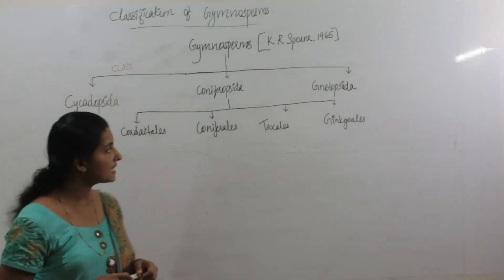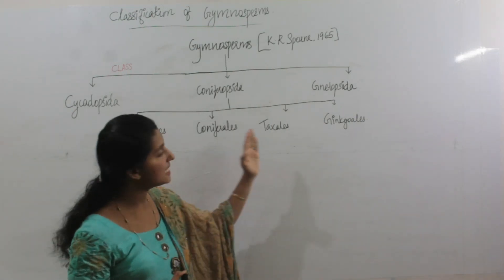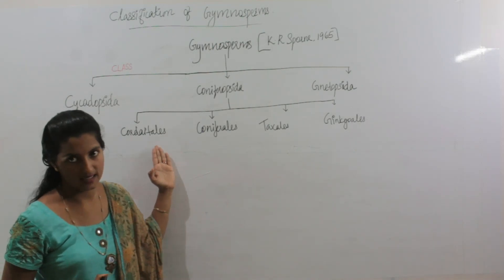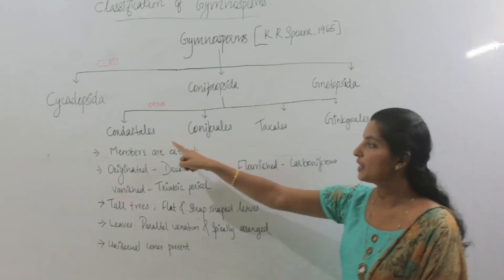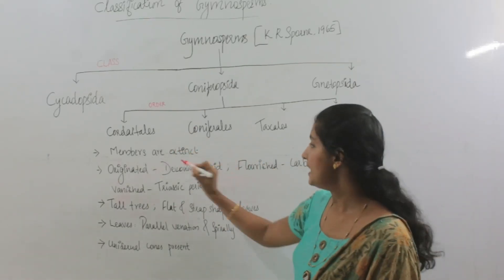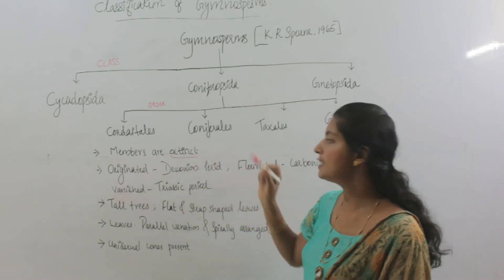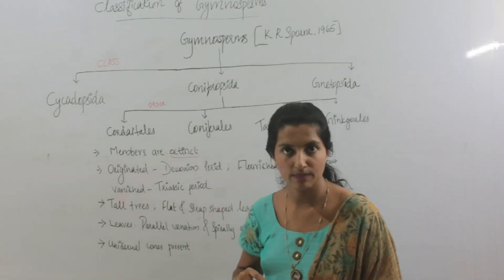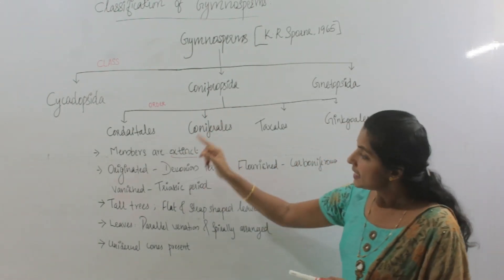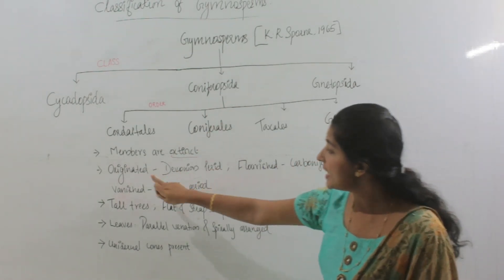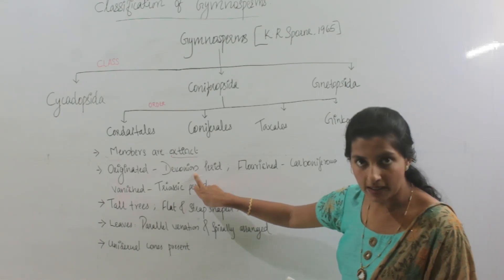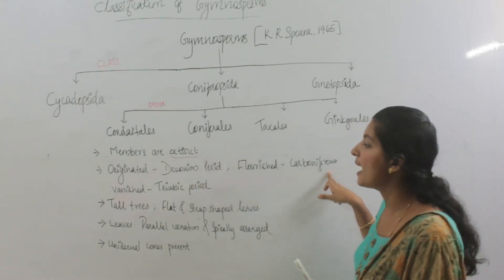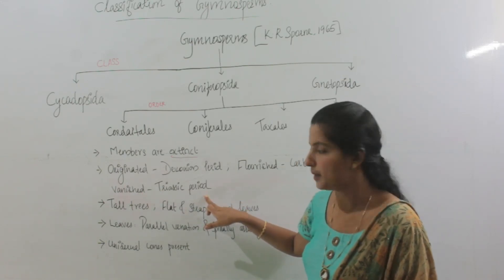We will discuss the features of these different orders. First, we will see the characters of the order Cordaitales. The members of the order Cordaitales are extinct — there are no living members. These extinct members originated in the Devonian period, flourished well in the Carboniferous period, and vanished in the Triassic period.